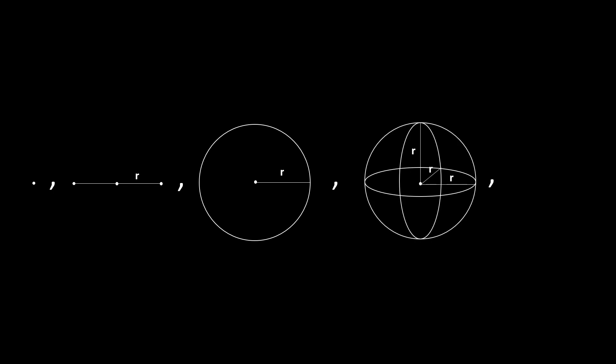A point is a zero-dimensional sphere, a line is a one-dimensional sphere, a circle is a two-dimensional sphere, and the sphere itself is a three-dimensional sphere. So what comes next? How do we think about four-dimensional spheres? How do they look?